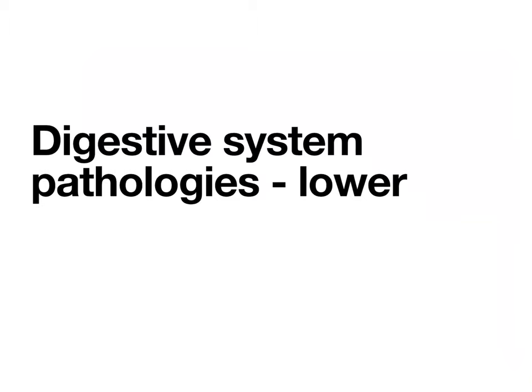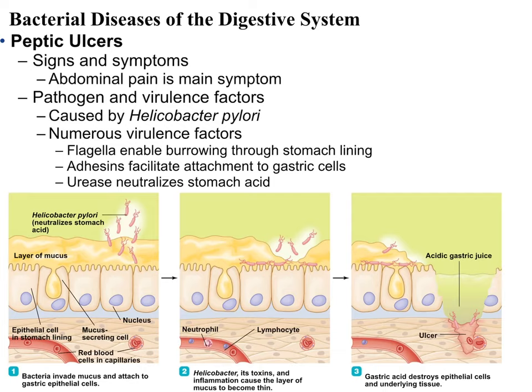The most common pathologies of the digestive system are bacterial, though viruses also infect the digestive system but are less common and sometimes less severe, occasionally going completely unnoticed. Starting off with the top of the lower digestive system is the stomach, which is not frequently infected by either viruses or bacteria.